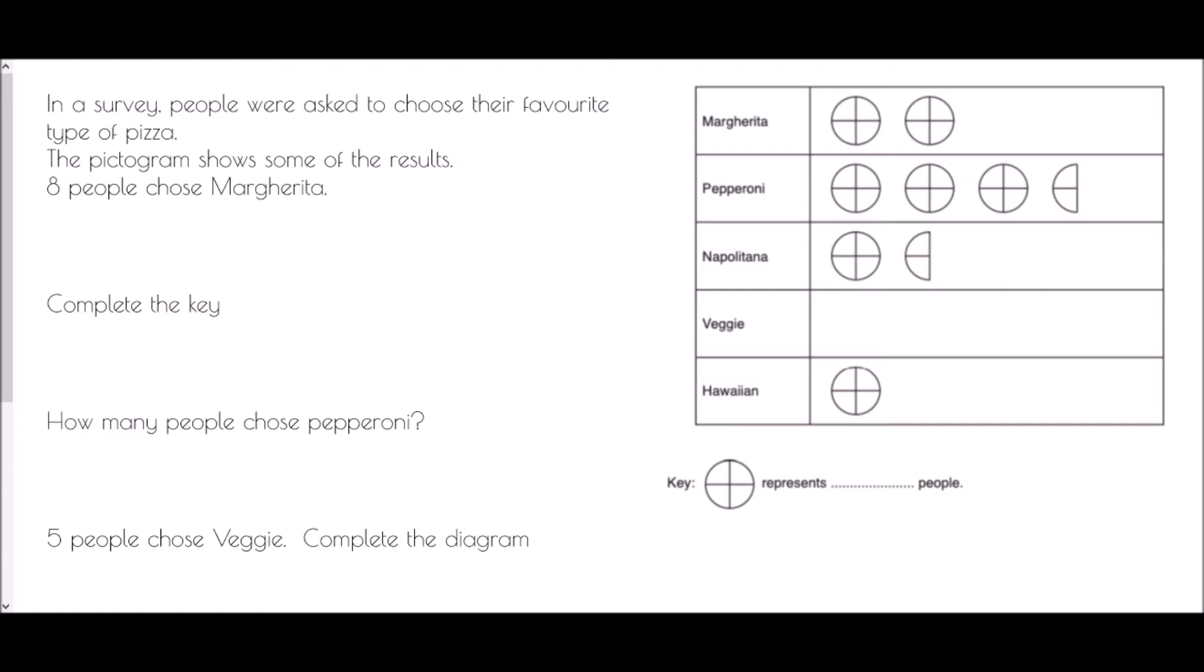A pictogram is a diagram where we use pictures of certain items in order to display how many people have selected a certain item or how many items have been included. And so in this case we've been talking about pizza and so we've used images of pizzas.